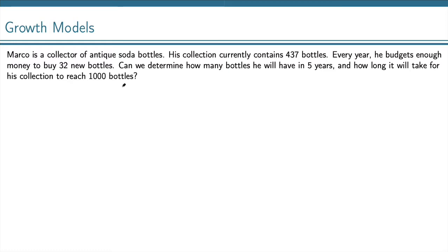So just looking at this information, it seems like yes, we should be able to figure out how much he'll have and how long it will take to reach 1,000 bottles. The question is, how do we write that model mathematically?